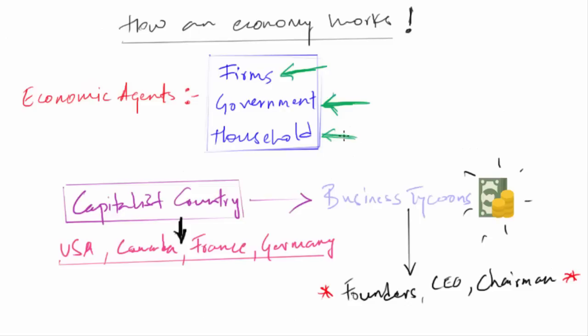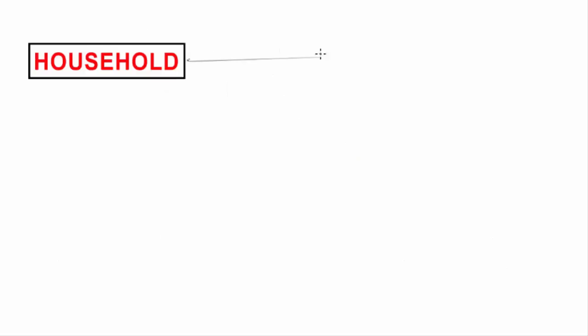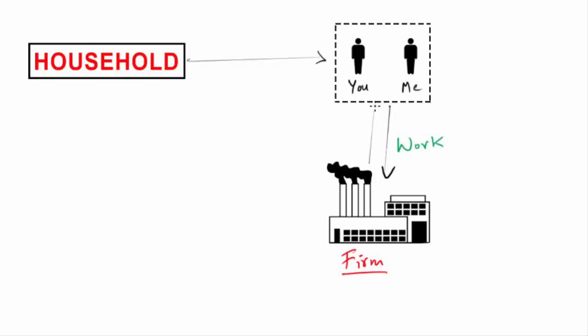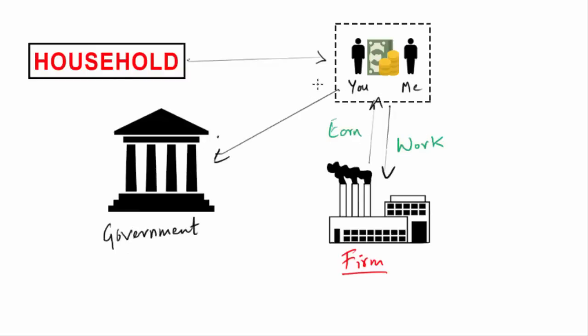Now apart from the firms and the government, there is another major agent that makes up the economy, which is called the household sector. By household I mean a single individual or a group of individuals who take decisions relating to their own consumption. Household consists of people like you and me. These people work in firms as workers and earn wages. These people are also the ones who work in the government departments and earn salaries. They are also the owners of firms and earn profits.